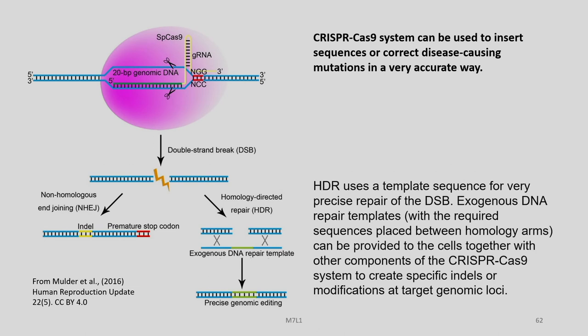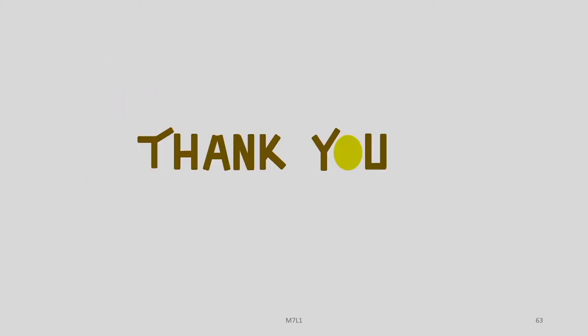CRISPR-Cas9 can be used to insert sequences or correct disease-causing mutations in a very accurate way. HDR uses a template sequence for very precise repair of the DSB. Exogenous DNA repair templates with the required sequences placed between homology arms can be provided to the cells together with other components of the CRISPR-Cas9 system to create specific indels or modifications at the target genomic loci. We will be discussing the applications of CRISPR-Cas9 technology in the next lecture in detail. With this we come to an end of today's lecture. Thank you for your patient hearing.